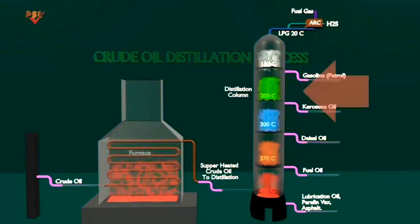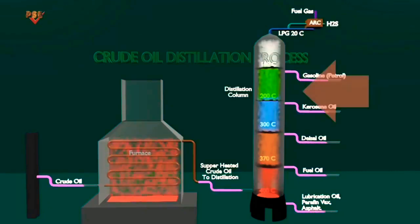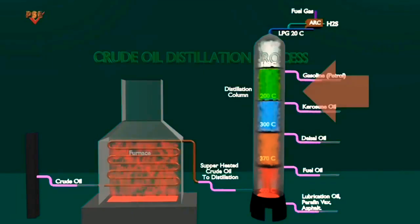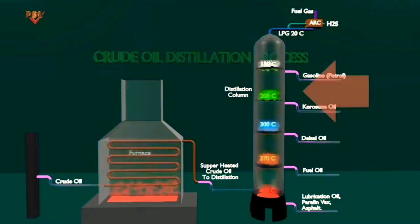Naphtha could be blended into motor gasoline, but is more likely sent to a catalytic reforming unit for octane improvement.